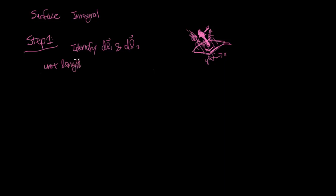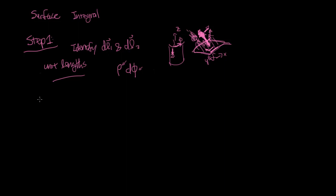Make sure your differential lengths are unit lengths. For example, on the cylindrical surface — the toilet paper roll portion — the surface is described by phi and Z. But remember, D-phi is in units of radians, not meters, so you must multiply by rho (the radius) to convert it to a unit length. So when you find your DL1 and DL2, if one of them is an angle, remember to multiply by the radius.